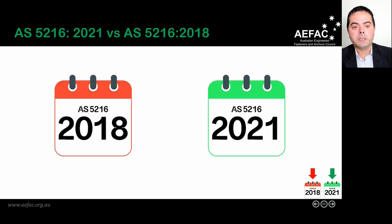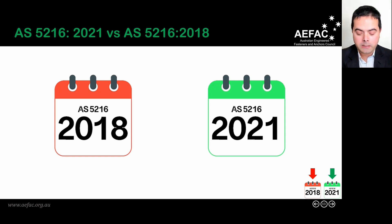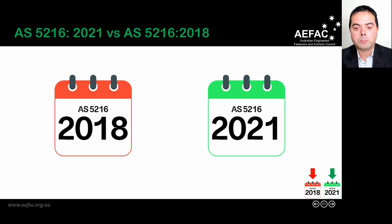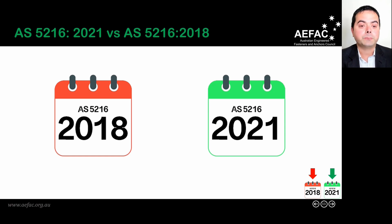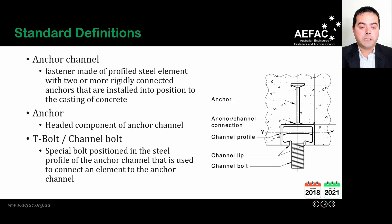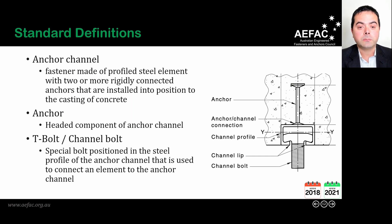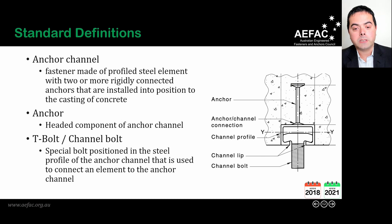I'll be using two icons throughout the slides. The red icon indicates a requirement that was present in the 2018 version, and the green icon in the lower right corner indicates information that is new in the 2021 edition. The anchor channel is covered in both 2018 and 2021, so you'll see both icons in the lower right corner. The definition of anchor channel is taken directly from AS 5216.